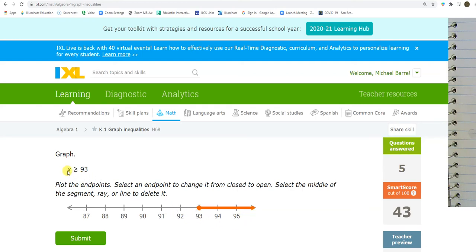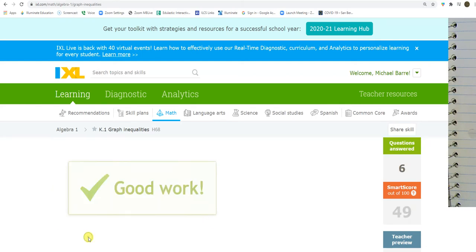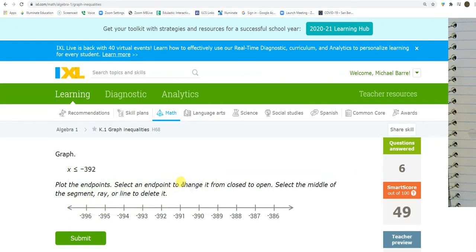And the open and closed is based off of this inequality symbol right there. Closed circle. Less than negative 392. Closed circle. Less than.